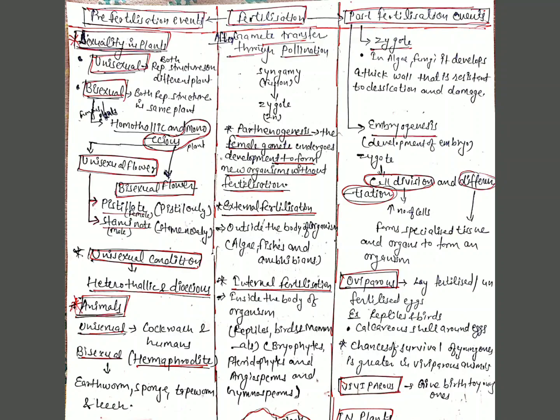To summarize the events of sexual reproduction: pre-fertilization events include gametogenesis and gamete transfer; after gamete transfer, fusion of gametes — fertilization — takes place; and after fertilization come the post-fertilization events. In post-fertilization events, the first is the formation of the zygote. In organisms belonging to fungi and algae, the zygote generally develops a thick wall resistant to desiccation and damage and undergoes a period of rest before germination. The zygote is the vital link that ensures continuity of the species between one generation and the next.